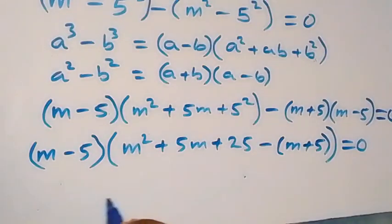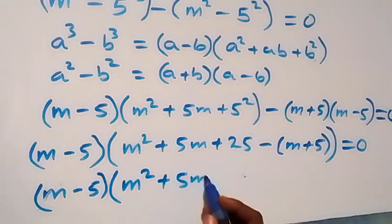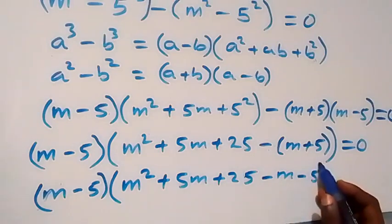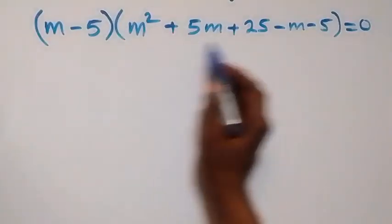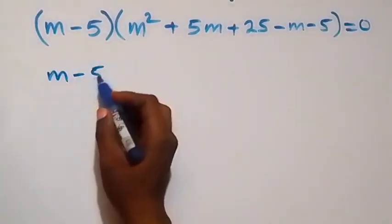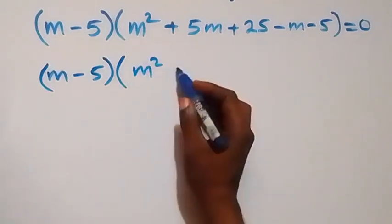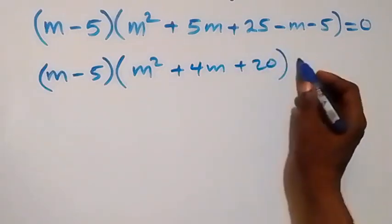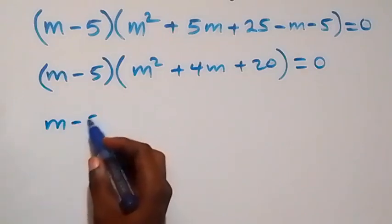Simplifying further, we open the brackets. We have m minus 5 times open bracket m squared plus 5m plus 5m plus 25, close bracket, minus m minus 5 times open bracket m squared plus 5m minus m, close bracket, equals zero.